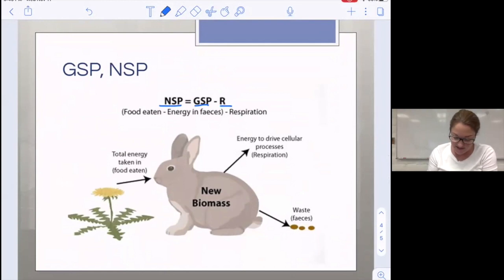Net secondary productivity is based on the weight gain of the animal. The weight gain depends on how much energy it's taking in and how many calories it's burning.